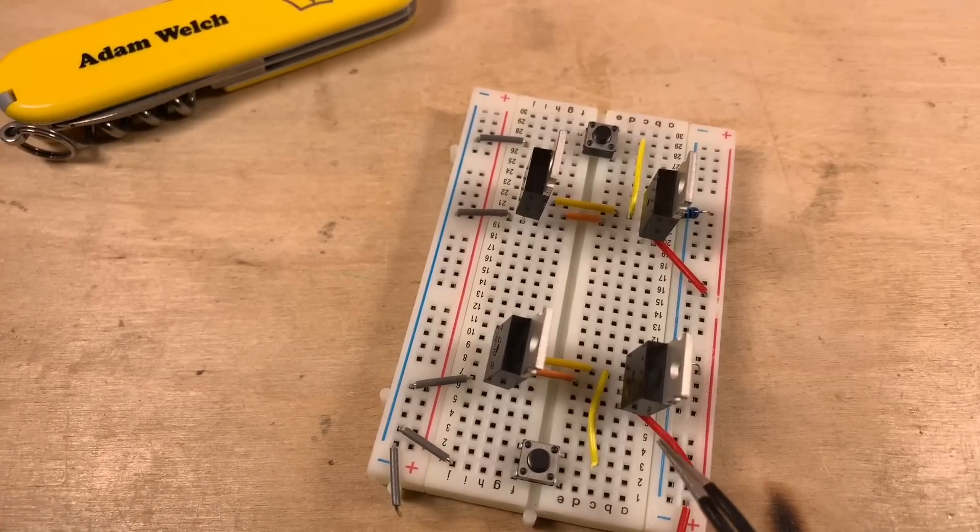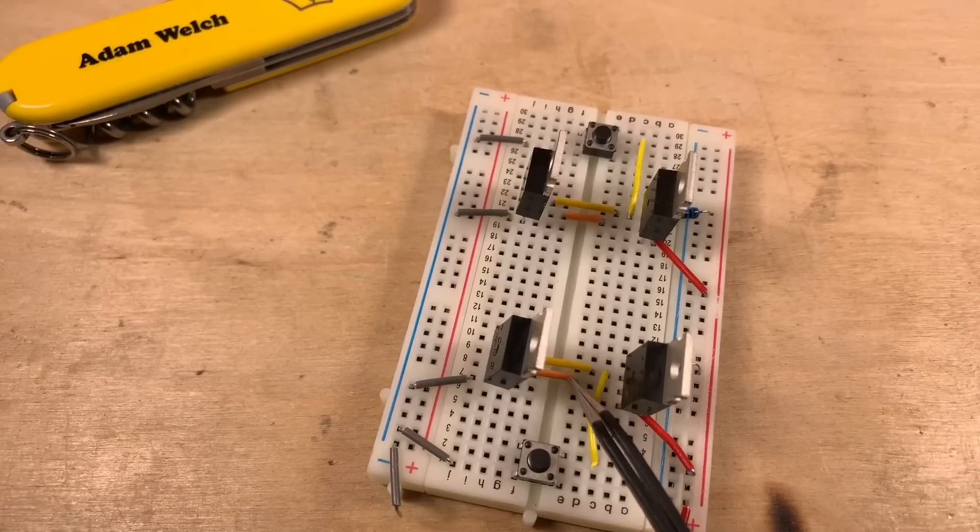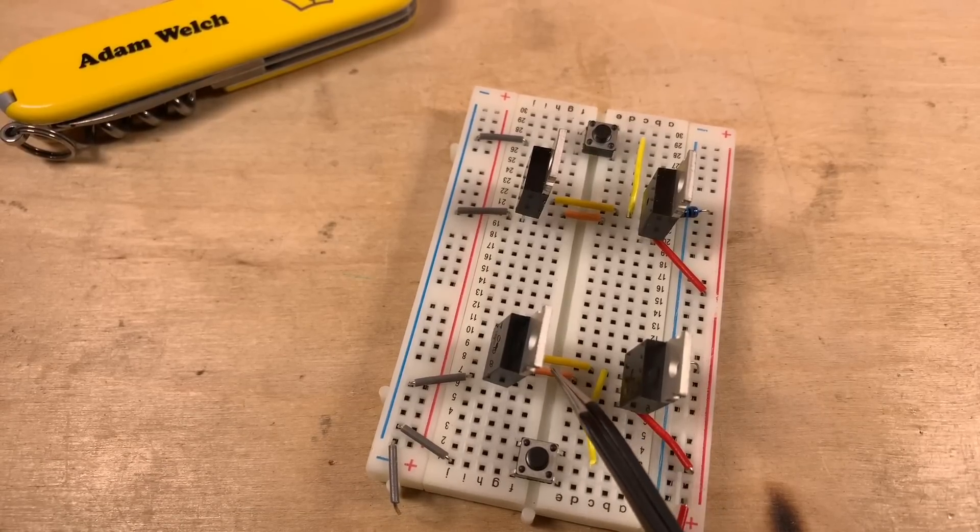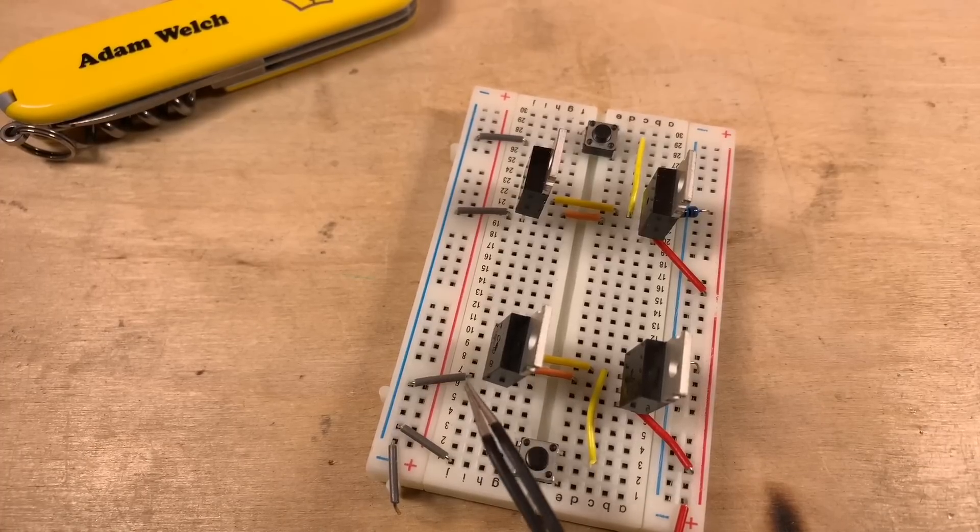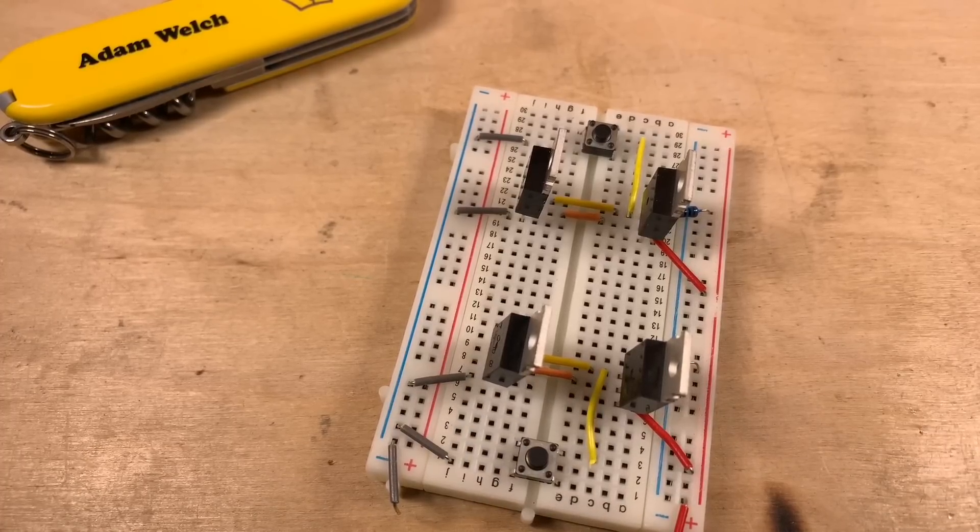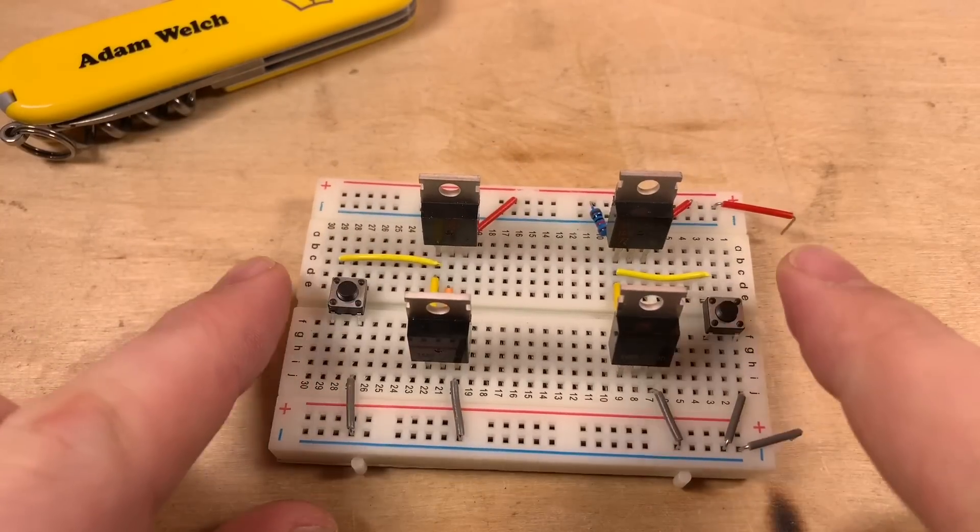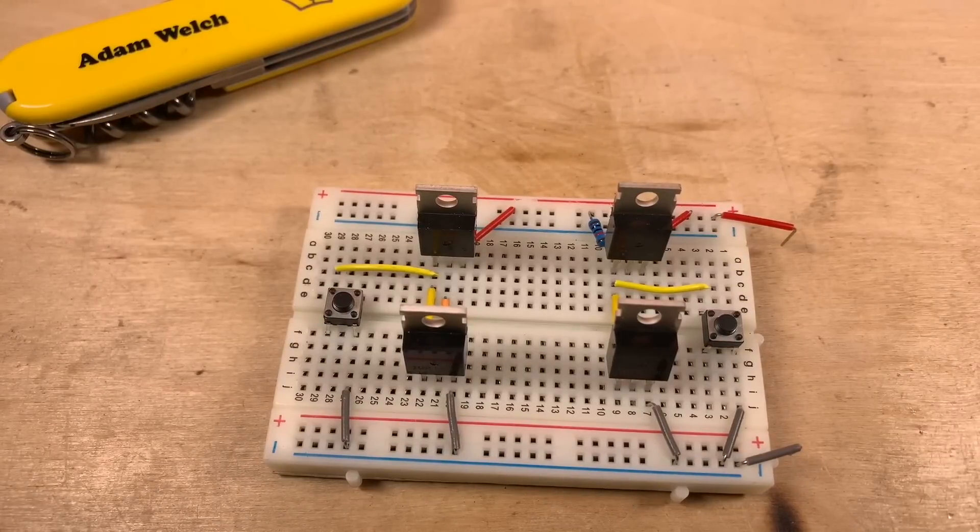The source of the P-channel MOSFET here is going to be connected to 12 volts. The two drains of the P and the N-channel MOSFET are connected together through this orange cable here and then the N-channel source is connected to ground. So exactly the same as I showed in my schematic except for the fact that I'm using buttons rather than NPN transistors.